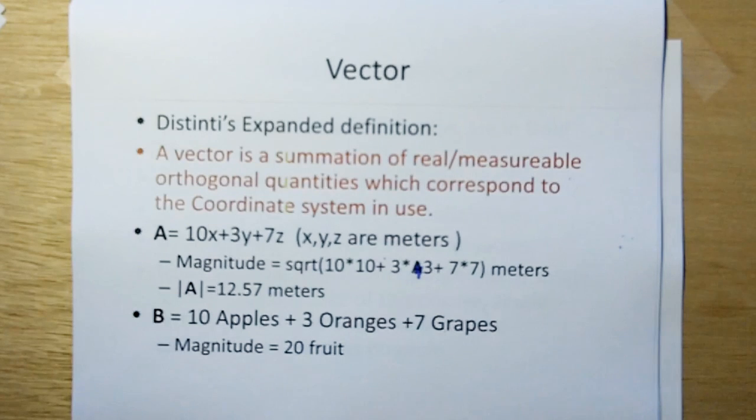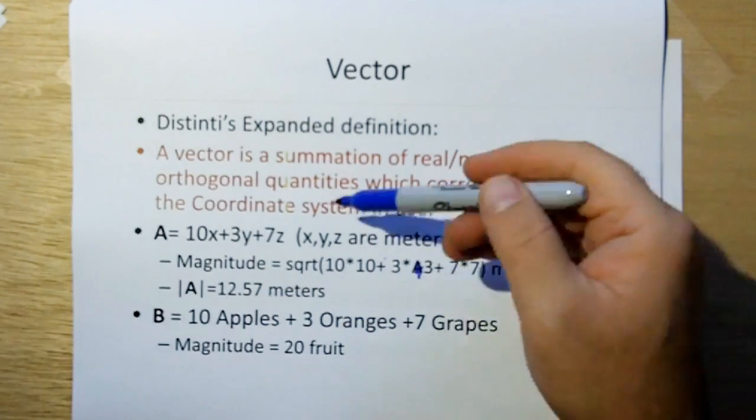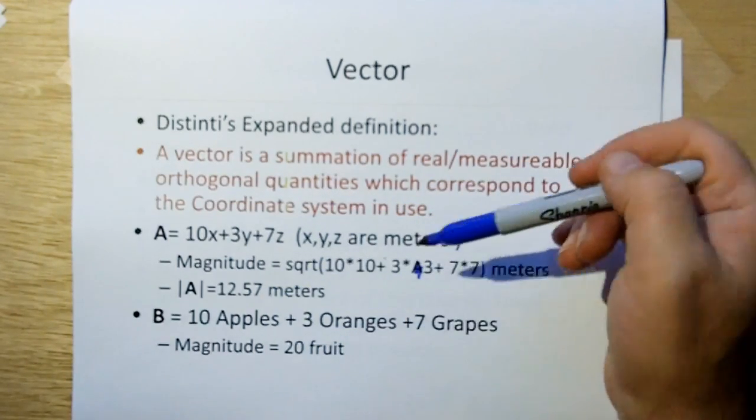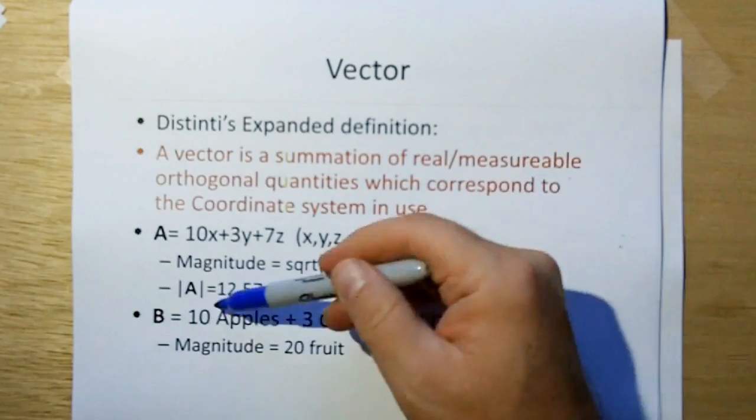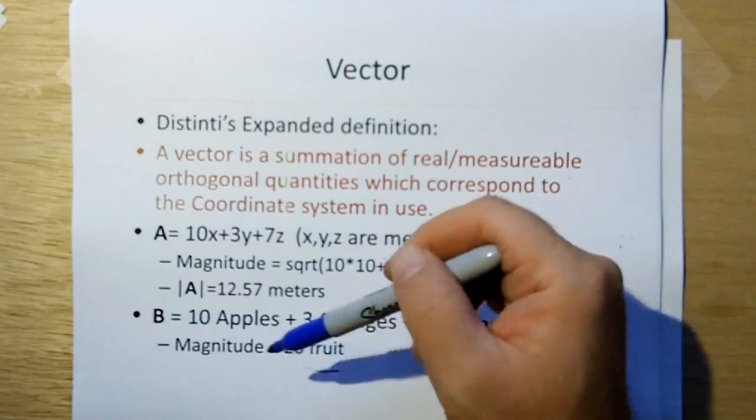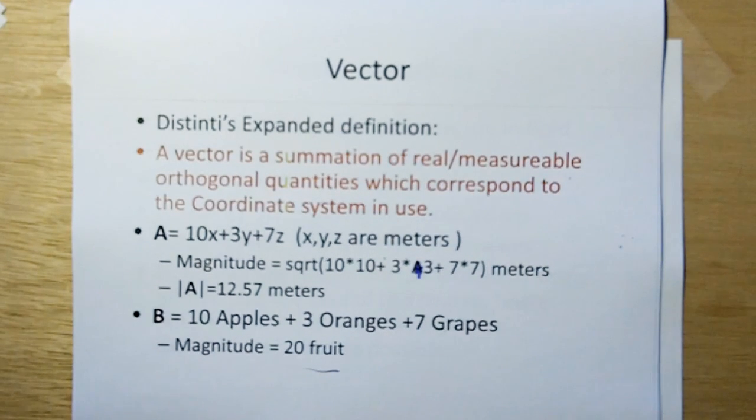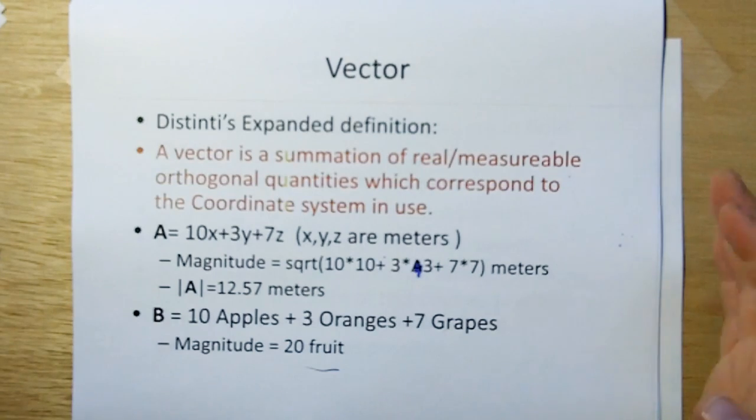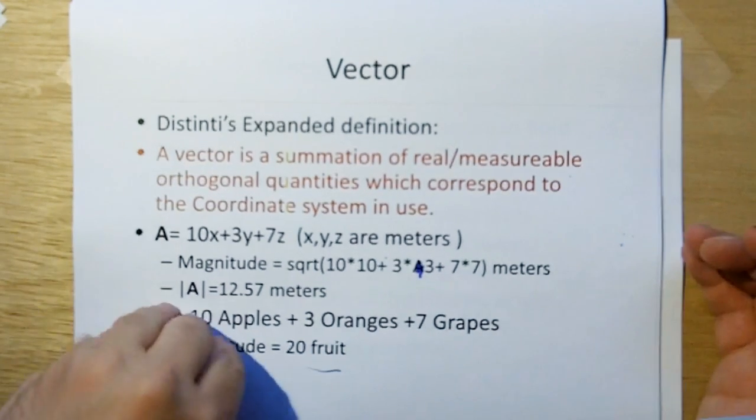But we could also have a vector defined in terms of other orthogonal quantities like apples. B could be 10 apples plus 3 oranges plus 7 grapes. But because these are orthogonal, but they're not quite in the arrangement that a right or a left-hand system is, you might define the magnitude of such a system as being just a summation of the different elements, which would give you 20 fruit. So your coordinate system and the system you're modeling may have different rules. And when we get into Q vectors, you're going to find out that there's virtually infinite rules out there. You've got to be careful which rule set we're going to use for any given modeling system. But it's going to be easier for us because when we get to ethereal mechanics, we're going to pick one and it's going to satisfy everything.